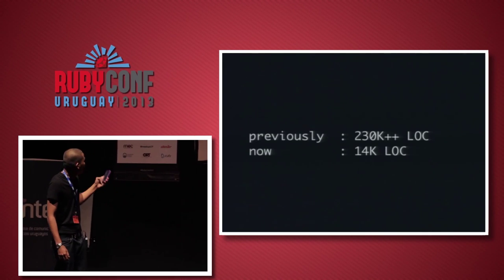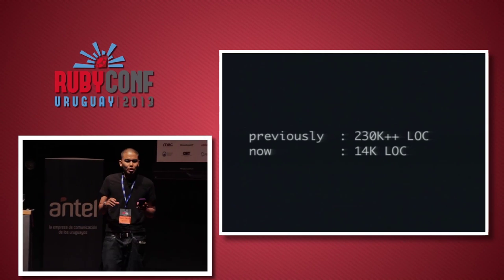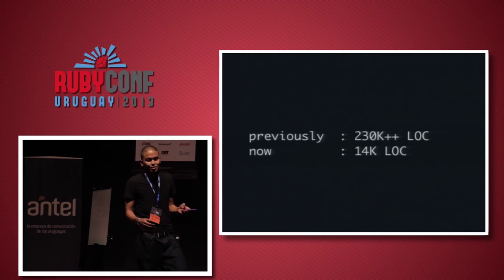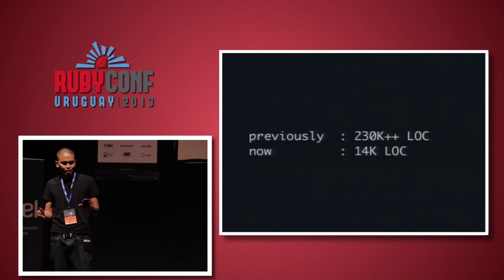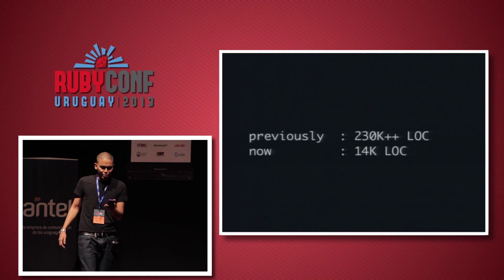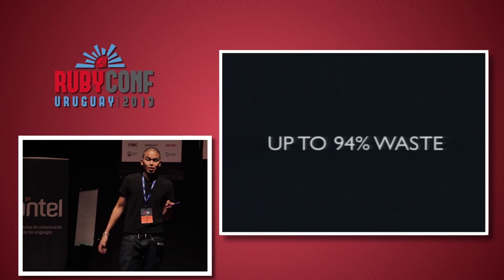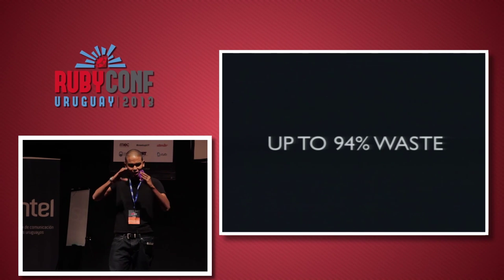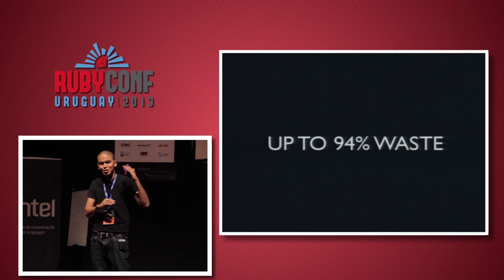Previously I had 230,000 lines of code without even adding any plugins, and in the new version I had just 14,000 lines — including your object-relational mapper and everything else. So depending on how much of Rails you use, we're talking 94% waste. There are a million methods just sitting there not being used. Your app is tiny, but your Rails application by default is huge. That kind of blew my mind.